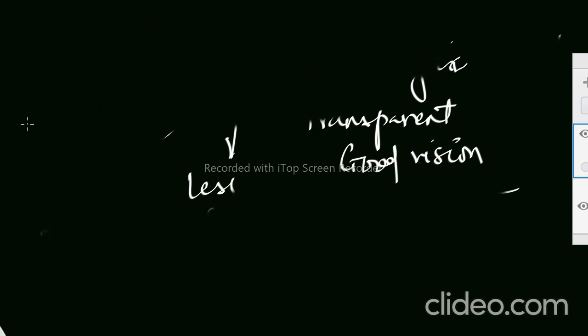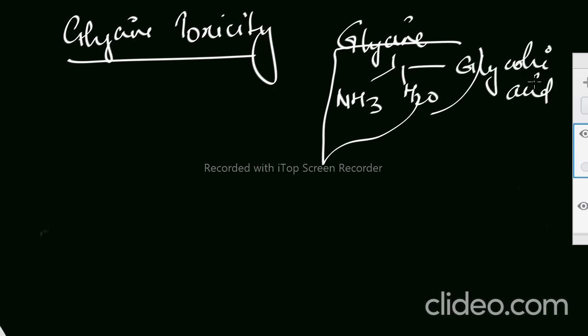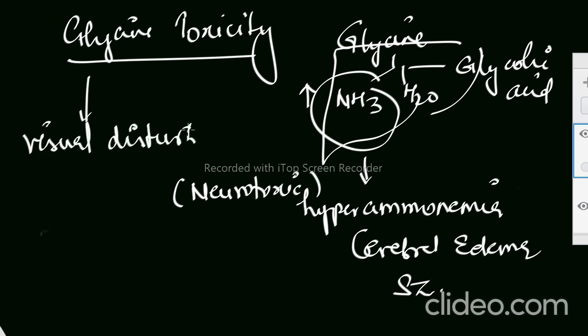But if you infuse more of glycine, then another question, what it can lead to? It can lead to glycine toxicity. So they may ask you about the glycine toxicity. Yes, actually in our liver, this glycine is metabolized into ammonia, water, as well as glycolic acid. Now this ammonia will be increased, so there will be hyperammonemia in the body, which can be neurotoxic to us. It can cause neurotoxicity, it can lead to cerebral edema, can cause seizures in the body. And also it will manifest as visual disturbances in the patient.